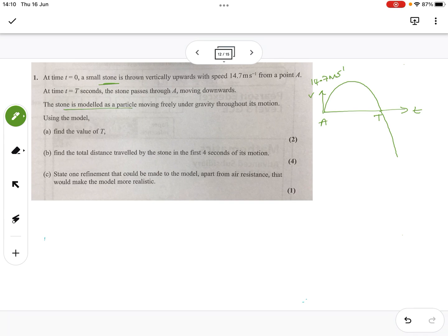The stone is modeled as a particle moving freely under gravity. Lovely. Using the model, find the value for t. So, this is moving under gravity. Gravity is a constant acceleration. It's got no force pushing it up or pushing it down other than gravity. So, this is a constant acceleration question.